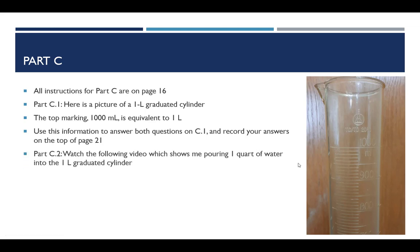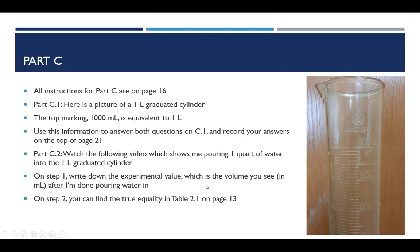For part C2, I'm going to show you a video. And that video will show me taking 1 quart of water and pouring that into the 1 liter graduated cylinder. Now the container I'm going to hold actually says 4 cups, but 4 cups is the same as 1 quart. So for step 1 from C2, you'll want to write down the experimental value, which is going to be the value you'll see after I'm done pouring the water. You'll see how much water it fills in. So that will tell you how many milliliters are in a quart. And then you can find the true equality where it asks for that on page 13. Table 2.1 gives you the true value as opposed to the experimental value, which is what you see from what I'm doing.